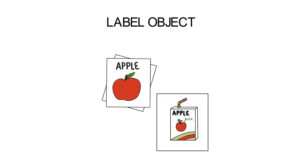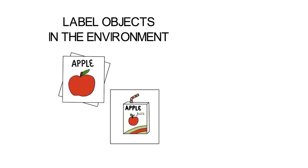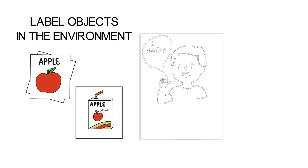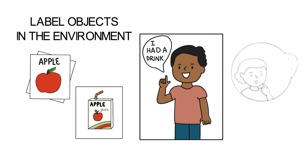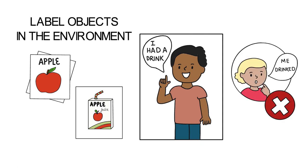Expressive language skills involve the ability to label objects in the environment, describe actions and events, put words together in sentences, use grammar correctly, e.g., I had a drink, not me drinked. Retell a story and answer questions about the story.